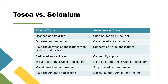Now let's look at the differences between Tosca and Selenium. The first difference is that Selenium is an open and free tool, but Tosca is a licensed and paid tool. Tosca is completely codeless, meaning you don't need to write any code to automate any application. Selenium, on the other hand, is a completely code-based tool — you have to use a programming language to write your scripts. Tosca supports all types of applications — web, desktop, and mobile — but Selenium supports only web applications.